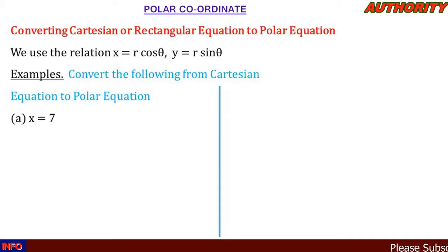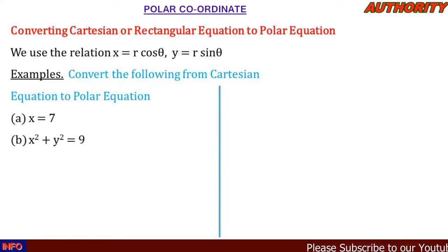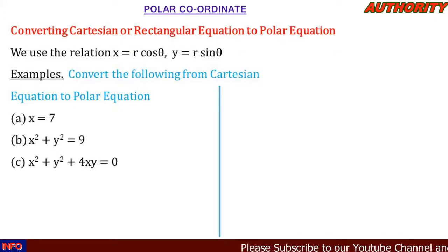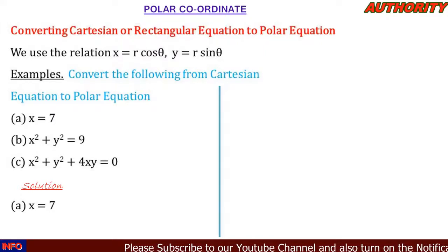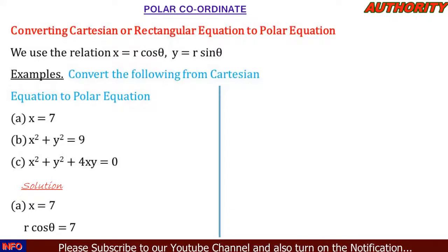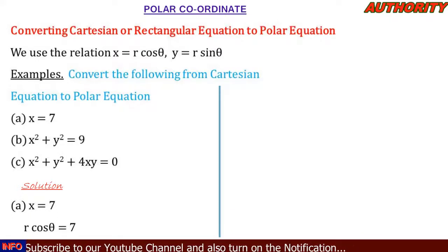Convert the following from Cartesian to polar equation. (a) x = 7, (b) x² + y² = 9, (c) x² + y² + 4xy = 0. For part (a), x = 7: we replace x with r·cosθ, giving r·cosθ = 7 as the polar equation.